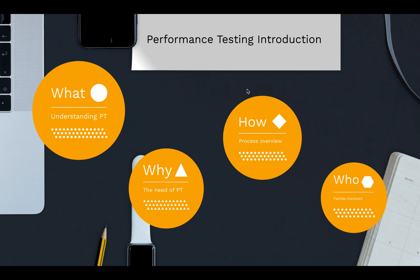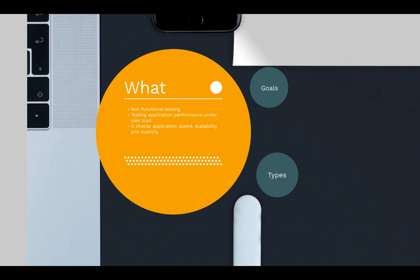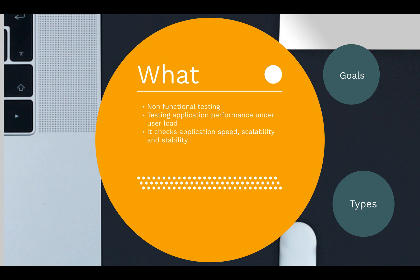We will start by first understanding what is performance testing. Performance testing is a non-functional testing. There are two types of software testing: functional and non-functional. Functional testing checks for the functional aspects of the application — for example, whether a search operation on a web page is returning correct results or not. Whereas non-functional testing checks aspects such as security, performance, or usability.